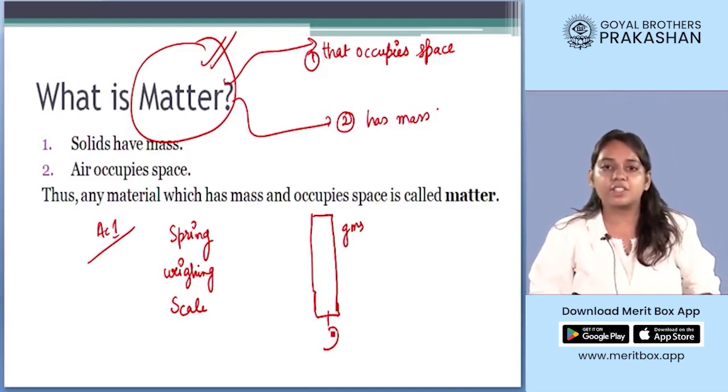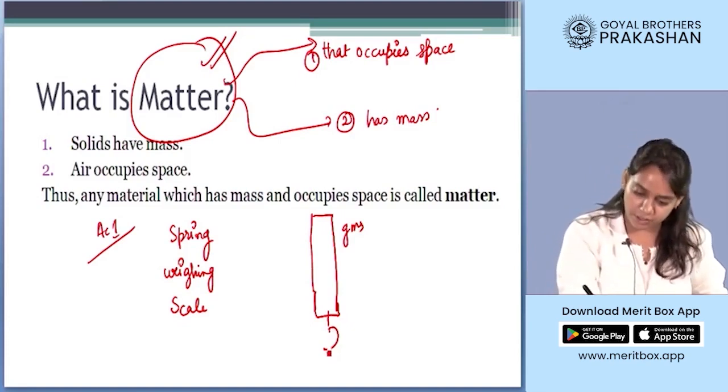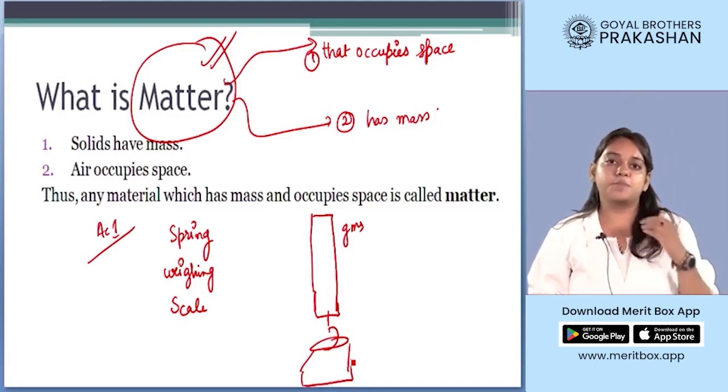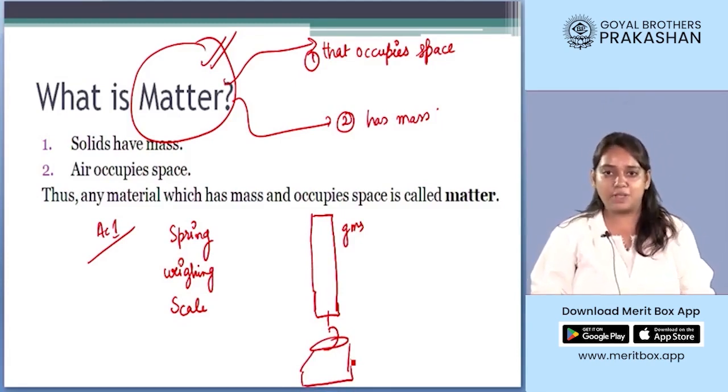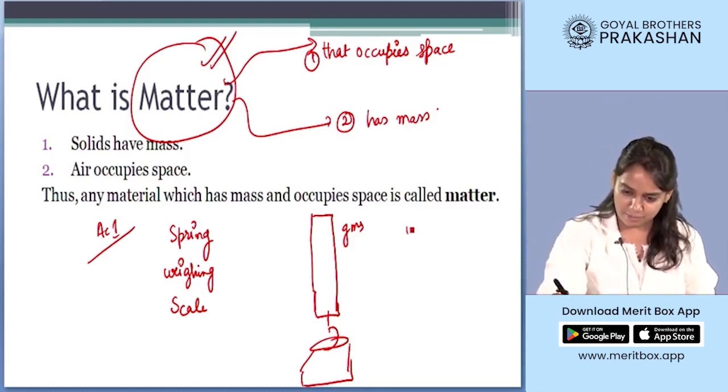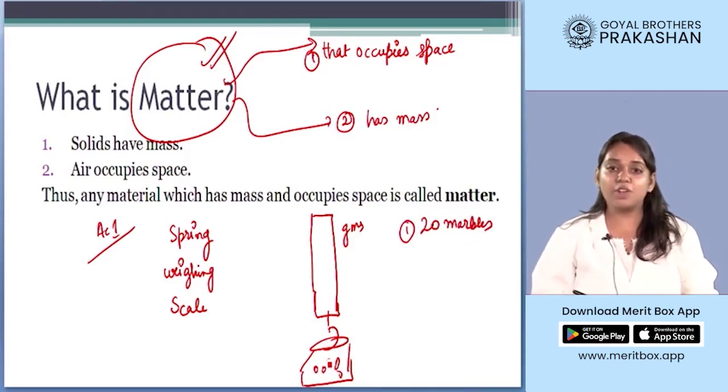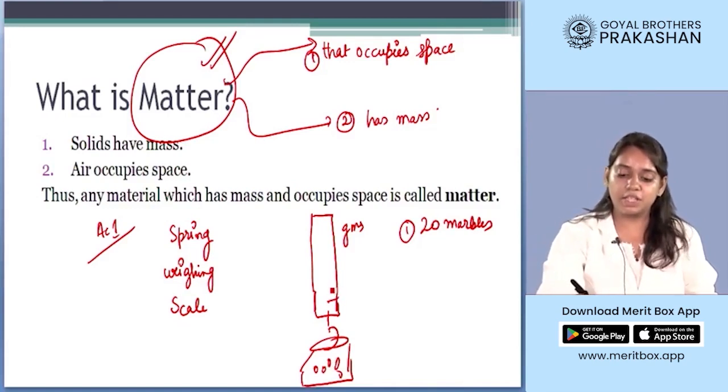Suppose this is the spring weighing scale that shows the weight of objects in grams and it has this small hook to which we can attach the object that we want to measure. We attach a jar to this spring weighing scale and now we will put different objects into it and start by measuring them.